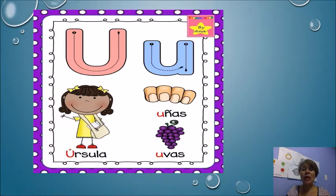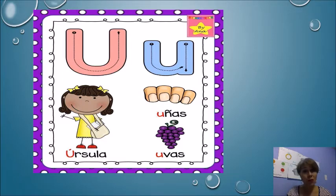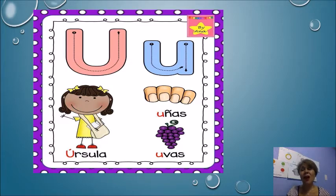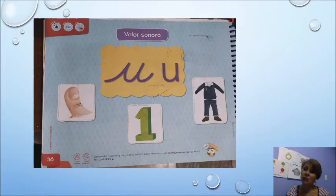Aquí tenemos a una niña que se llama Úrsula y empieza con U. El nombre de Úrsula empieza con la vocal U. Cada palabra inicia con la vocal U y está escrita de color rojo. Al lado de Úrsula tenemos unas uñas, y abajo de las uñas tenemos unas uvas. ¿Cómo suena la U? U. Muy bien chicos.